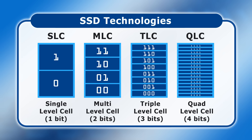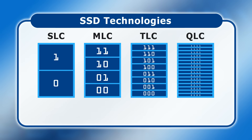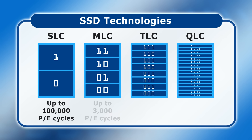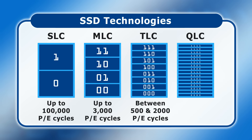The number of cycles varies between consumer and enterprise hardware and also between models and manufacturers. But as a guide, SLC drives can sustain up to about 100,000 program-erase cycles, consumer MLC up to about 3,000, TLC somewhere between 500 and 2,000, and QLC between about 300 and 1,000.